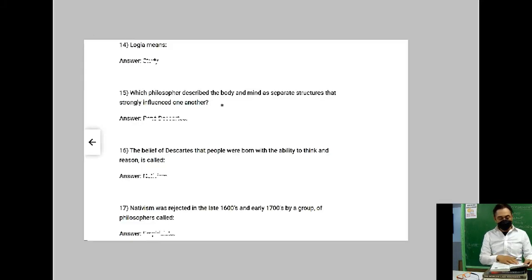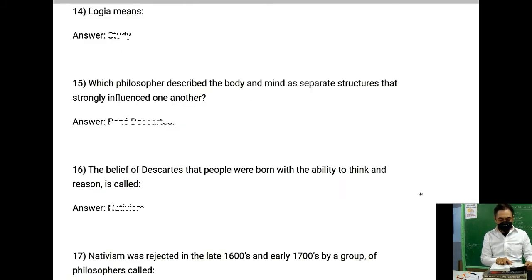Let's continue, number 14: Logia means? Number 15: Which philosopher described the body and mind as separate structures that strongly influence one another? Number 16: The belief of Descartes that people were born with ability to think and reason is called? Number 17: Nativism was rejected in the late 1600s and early 1700s by a group of philosophers called?